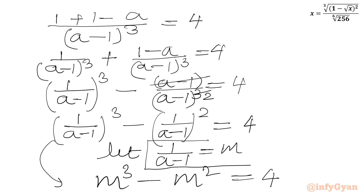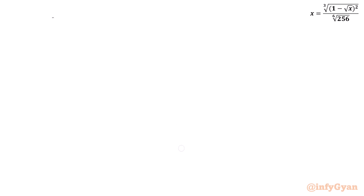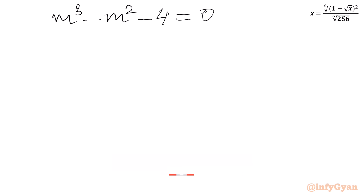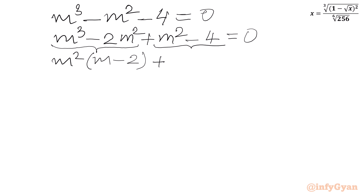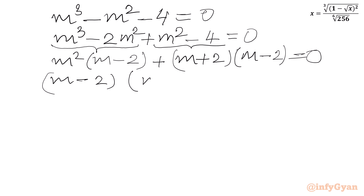Remember m equals 1/(a minus 1). Let us solve this cubic: m³ minus m² minus 4 equal to 0. Using factorization, rewrite minus m² as minus 2m² plus m². We get m²(m minus 2) plus (m² minus 4) equal to 0, which factors as m²(m minus 2) plus (m minus 2)(m plus 2) equal to 0, giving (m minus 2)(m² plus m plus 2) equal to 0.